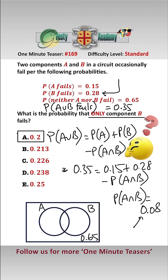We know that 0.15 and 0.28 is 0.43, and yet we know that the sum of the circles must be 0.35. So therefore this bit here must be 0.08.